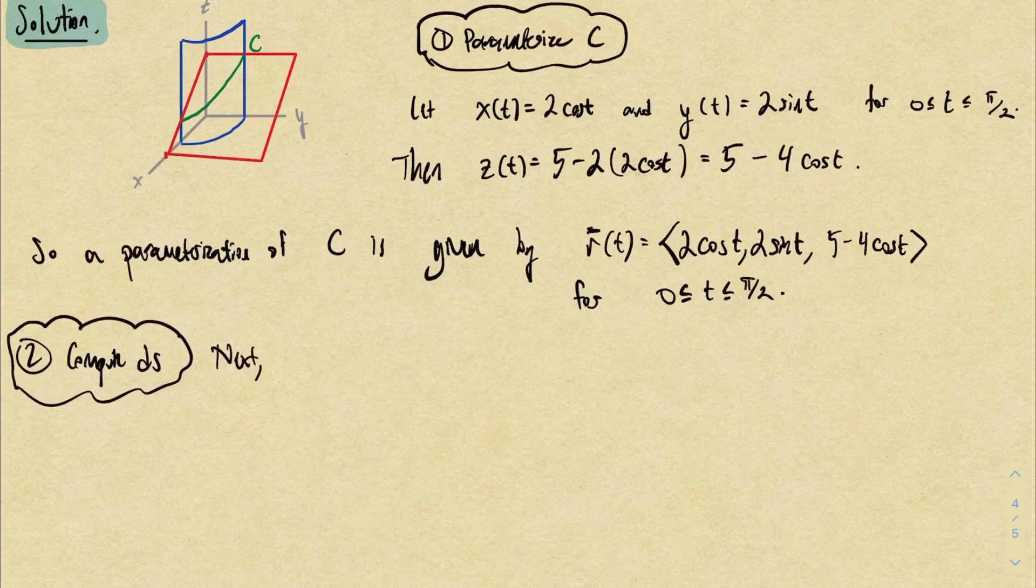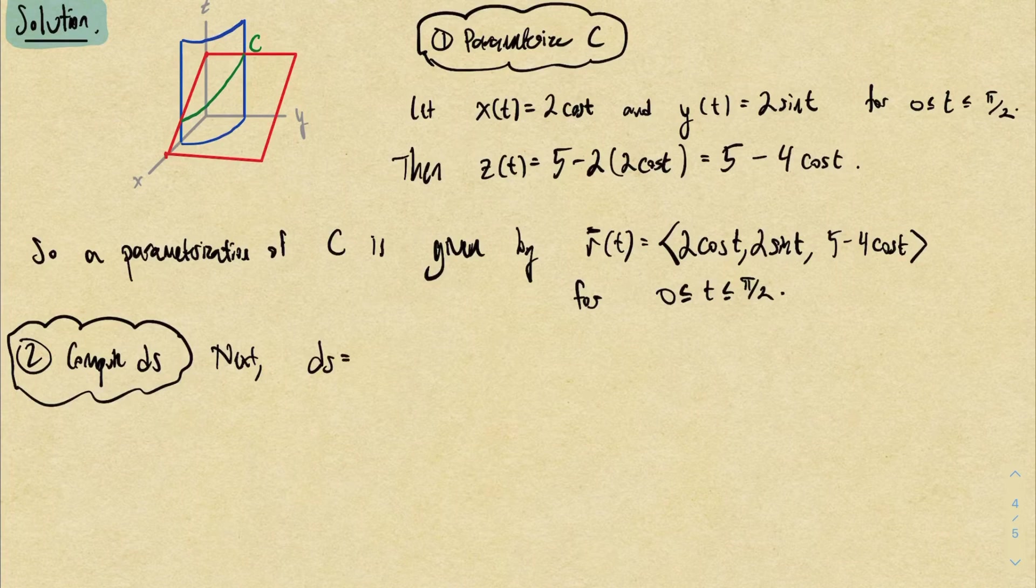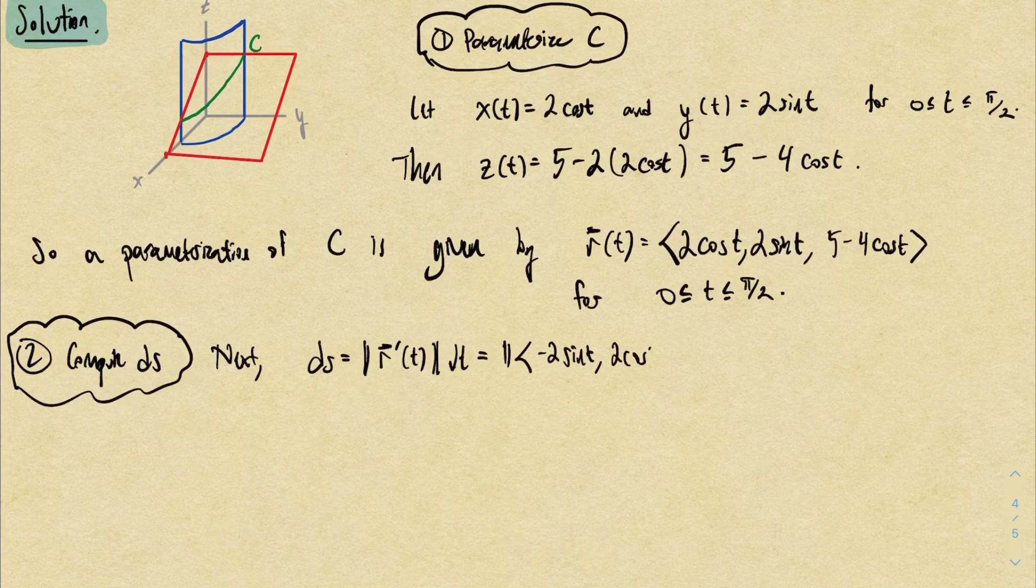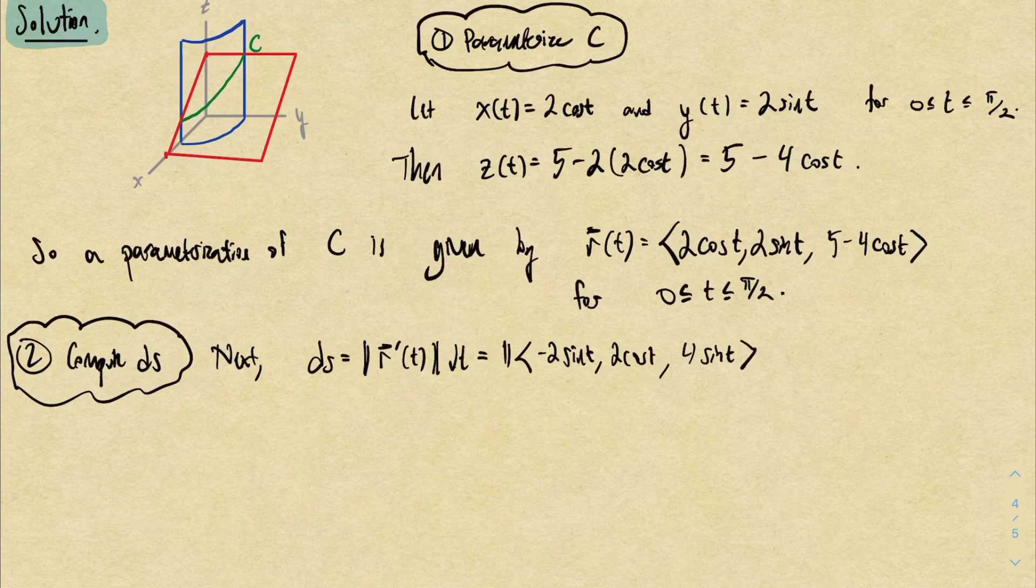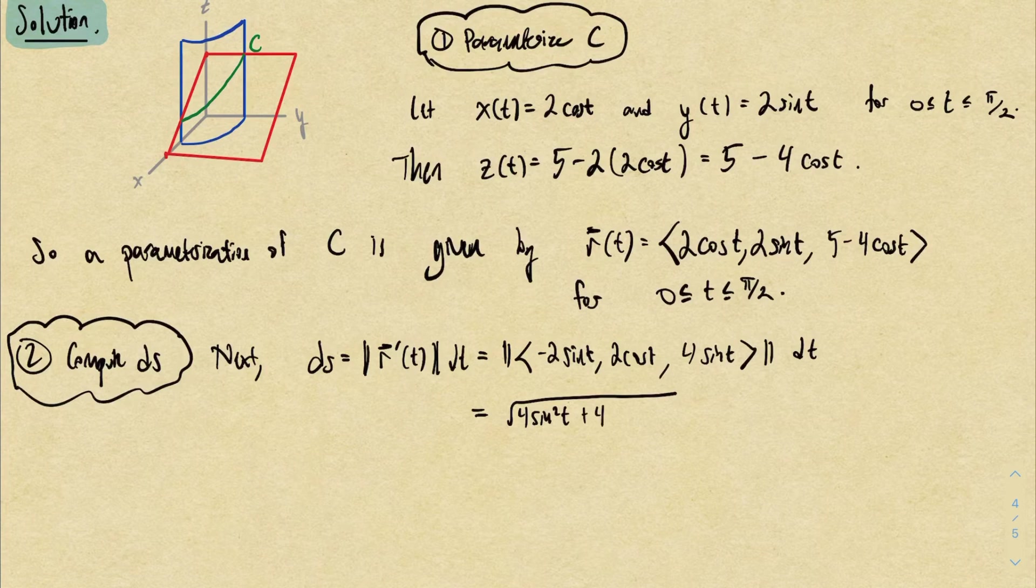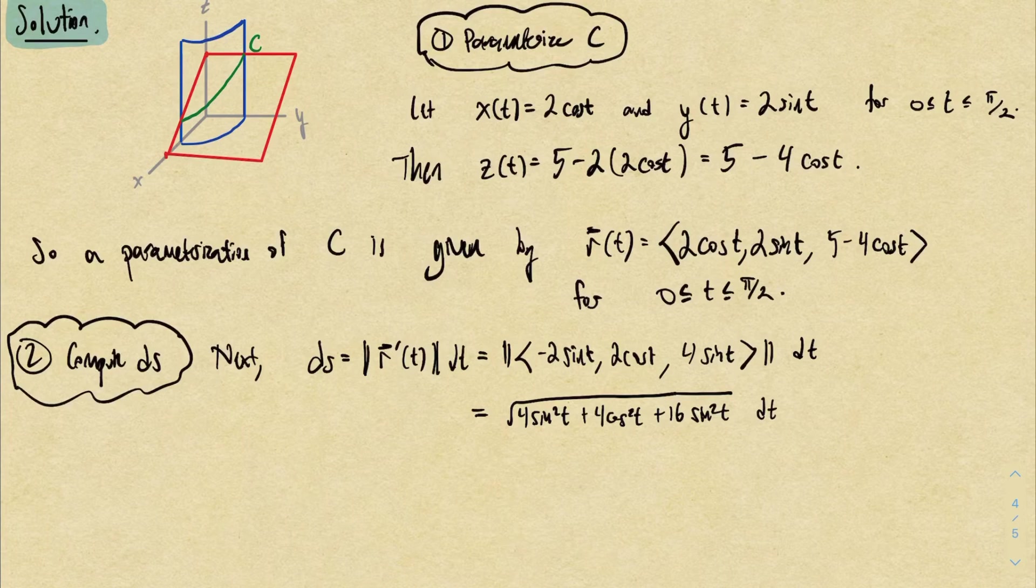All right, next up we want to compute the DS differential. Like I mentioned, DS is going to be the speed of our parameterization times dt, so that'll be the norm of r prime. r prime in this case will be <-2 sine t, 2 cosine t, 4 sine t>. Then taking the norm of that vector gives us square root of 4 sine squared t plus 4 cosine squared t plus 16 sine squared t. That looks horrifying but we can simplify things a little bit.